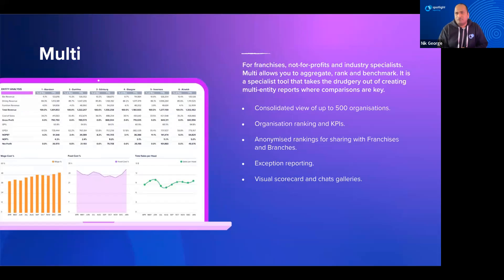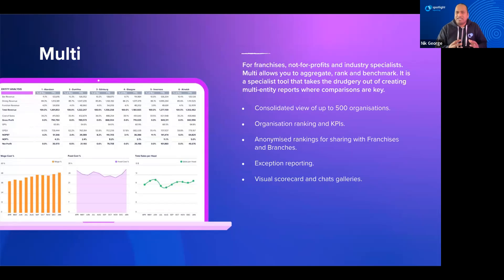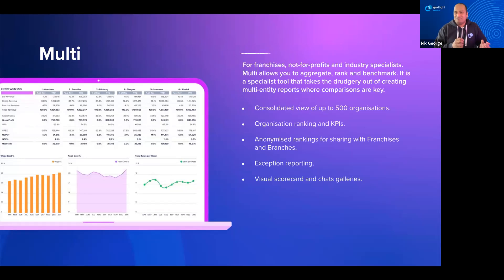Spotlight Multi is designed for franchises and large associations needing to consolidate up to 500 organizations. The focus here is on comparison — seeing how one franchisee or organization stacks up against another, who is the top performer, who is the worst, and who is not meeting budget targets. Multi has a range of reports tailored to those consolidated reporting needs.